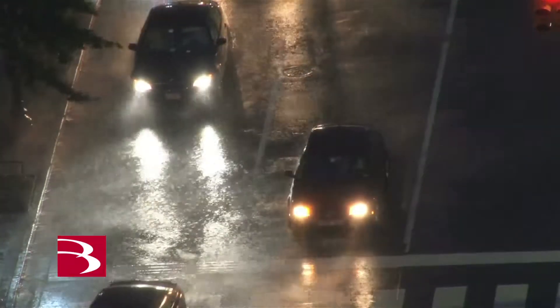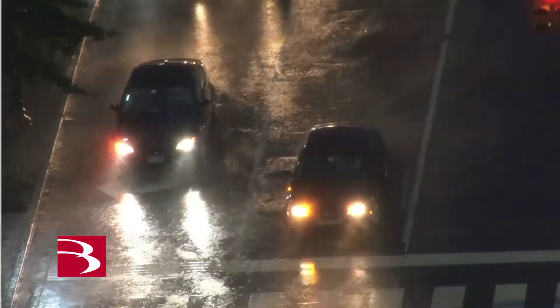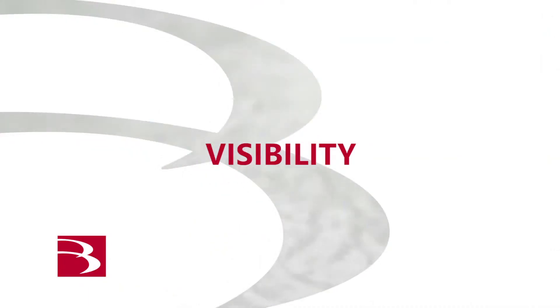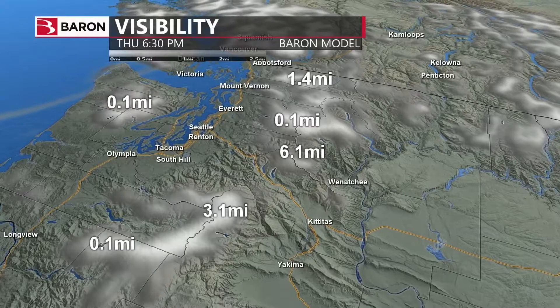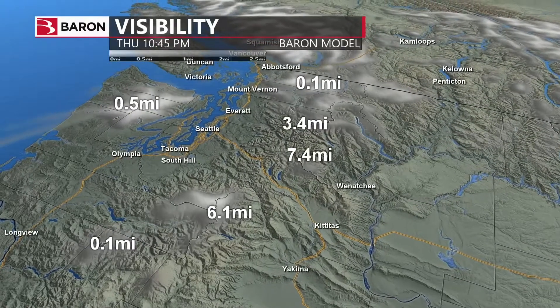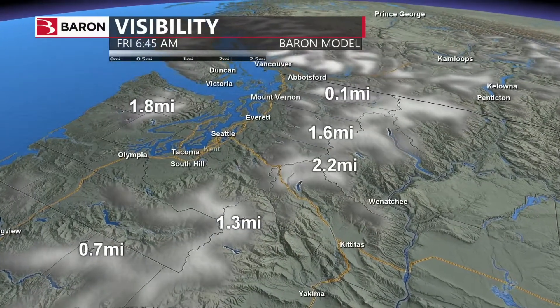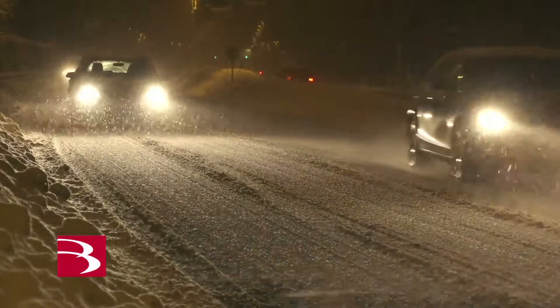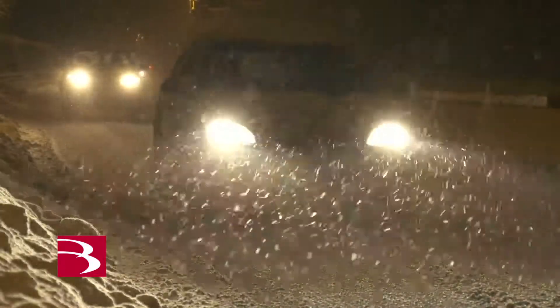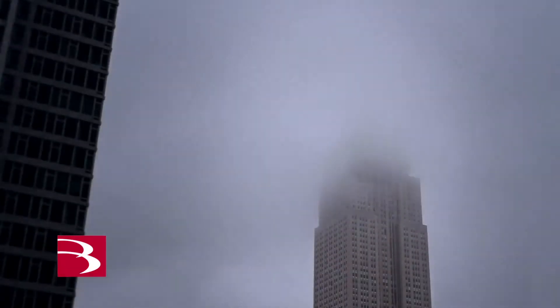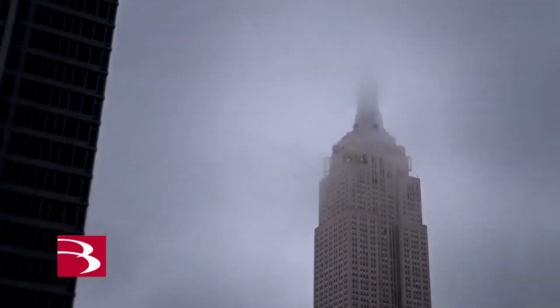We're also providing a visibility data product from the model that can show not only the effects of fog but other weather parameters as well. Within the visibility calculation, we account for fog, precipitation — so heavy snowfall causing reduced visibility will show up — and we also bring air quality into the equation. So visibility is shown as restricted based on any combination of fog, air quality, and precipitation.